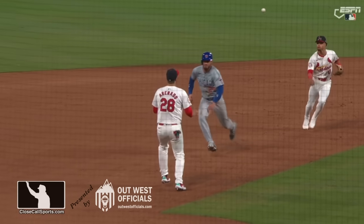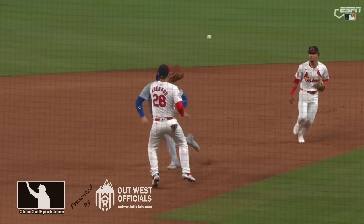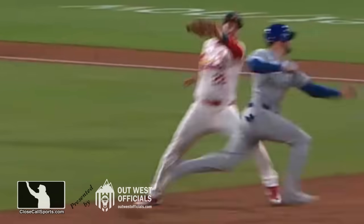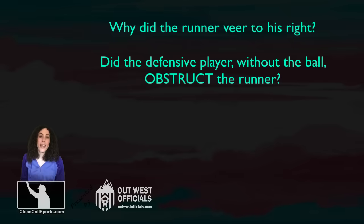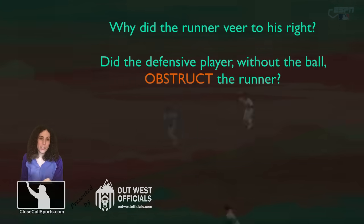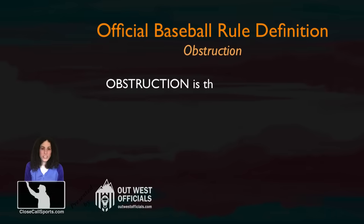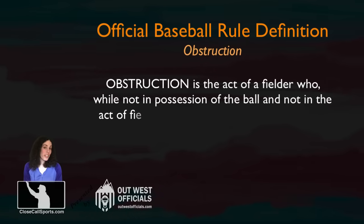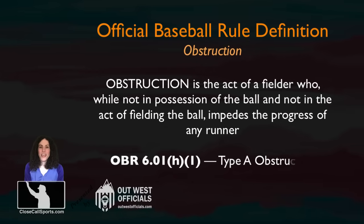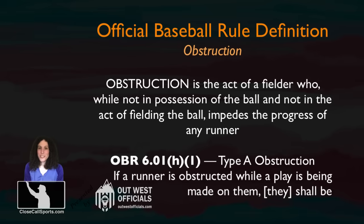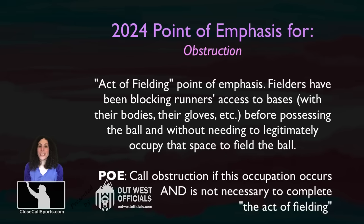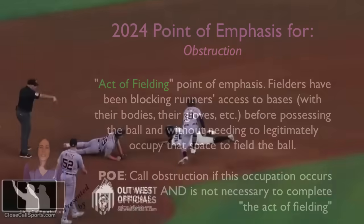But the question is: why did the runner veer to his right while the ball was still in the air? To answer that, we look at the defender. We turn our attention to the defense and ask: did Arenado obstruct Bellinger? Obstruction is the act of a fielder not in possession of the ball, not in the act of fielding a ball, who impedes the progress of any runner. Remember that this year there is a point of emphasis on obstruction, and it applies to this play too — some fielders are using the in-the-act-of-fielding loophole to try to obstruct runners illegally.